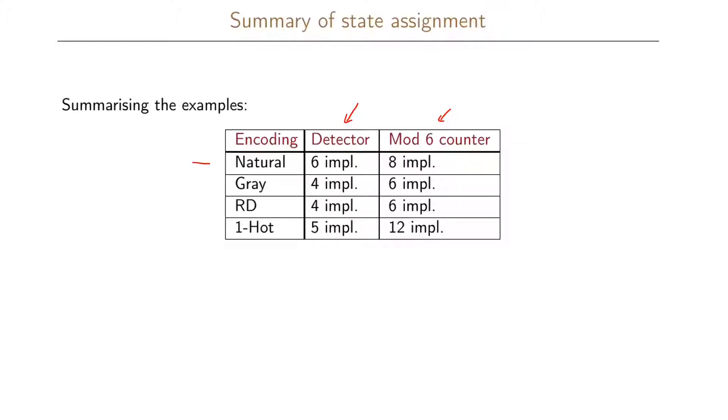We did the NBCD coding of our states. We tried to use a gray coding such that we only had one variable change for each state transition. We did our reduced dependency algorithm for state assignment, and then we also tried the one hot state assignment strategy.